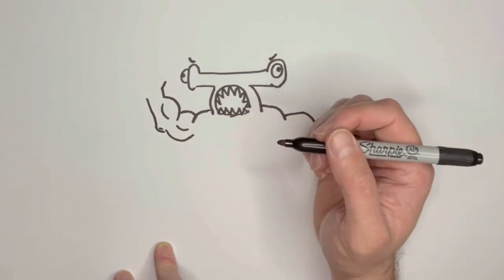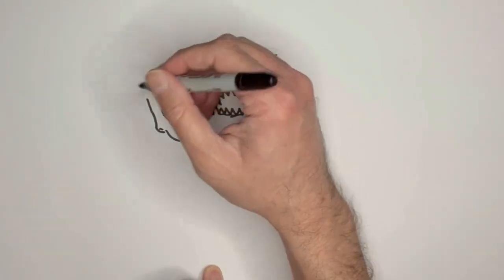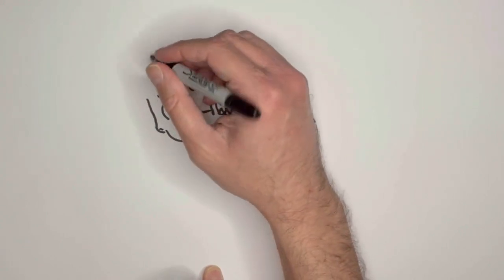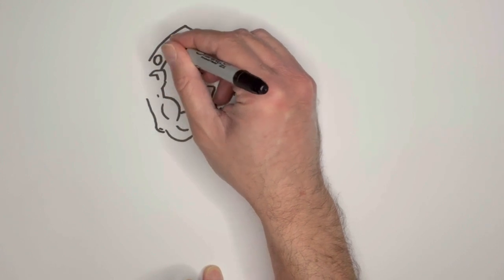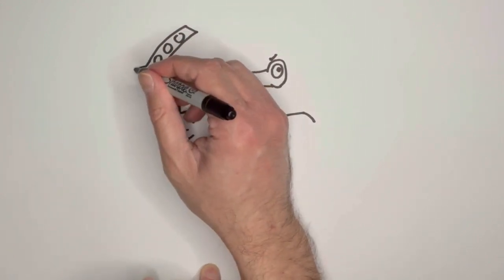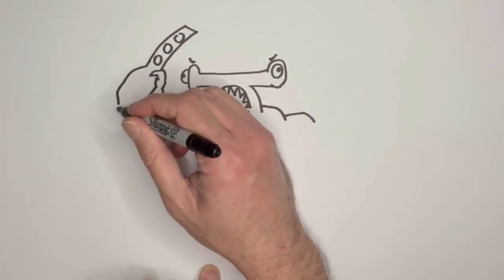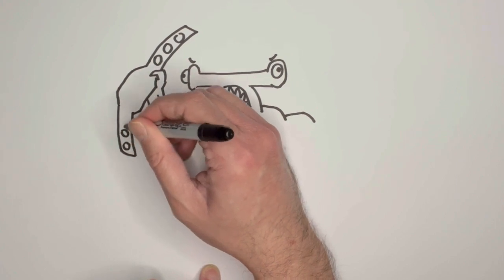And here we have the elbow and the rest of the arm. Look how big it is. Whoops. I gave him two biceps. You know what? It doesn't matter. Let's have our wrestler hammerhead shark with two biceps. That's just how strong they are.